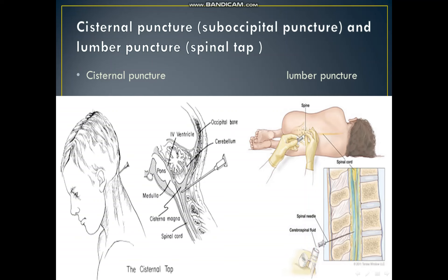Here is the position. This one is the cisternal puncture. Here is the occipital bone, here are the ventricles, here are the cerebellar bones, here is the medulla. From this point, insert the needle between the first cervical vertebra atlas and the occipital bone to withdraw the cerebrospinal fluid. In lumbar puncture, the patient lies curled and the sample is taken from the third and fourth lumbar vertebra for analyzing the cerebrospinal fluid.